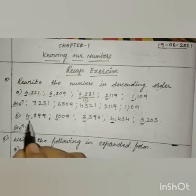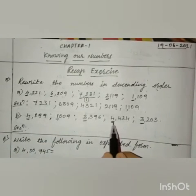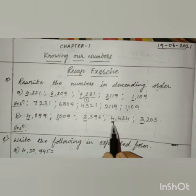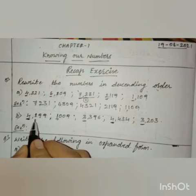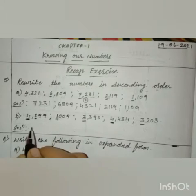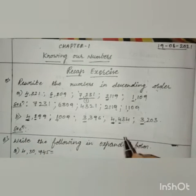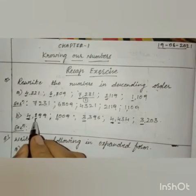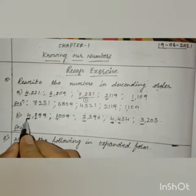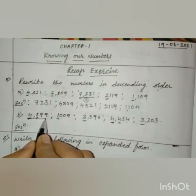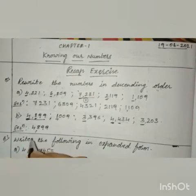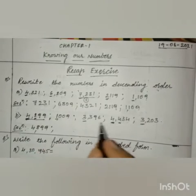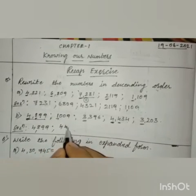We have 2 numbers having the same digit in the thousands place — both have 4. In these 2, to find which is greater, if the thousands place is the same, we compare the hundreds place. Here in this number we have 8 and here we have 4. Since 8 is greater than 4, 4,899 is the greatest number. The next number is 4,434.